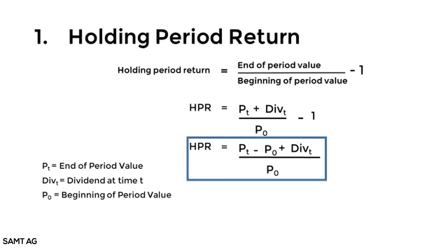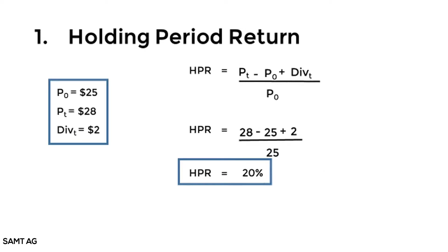We'll modify the end of period value. Say we're investing in stocks, so we need to cater for dividend income. So we have HPR (holding period return) equal to Pt, or value at time t, plus dividend at time t, divided by P0, which is the beginning value, minus 1. Then we'll simplify it.